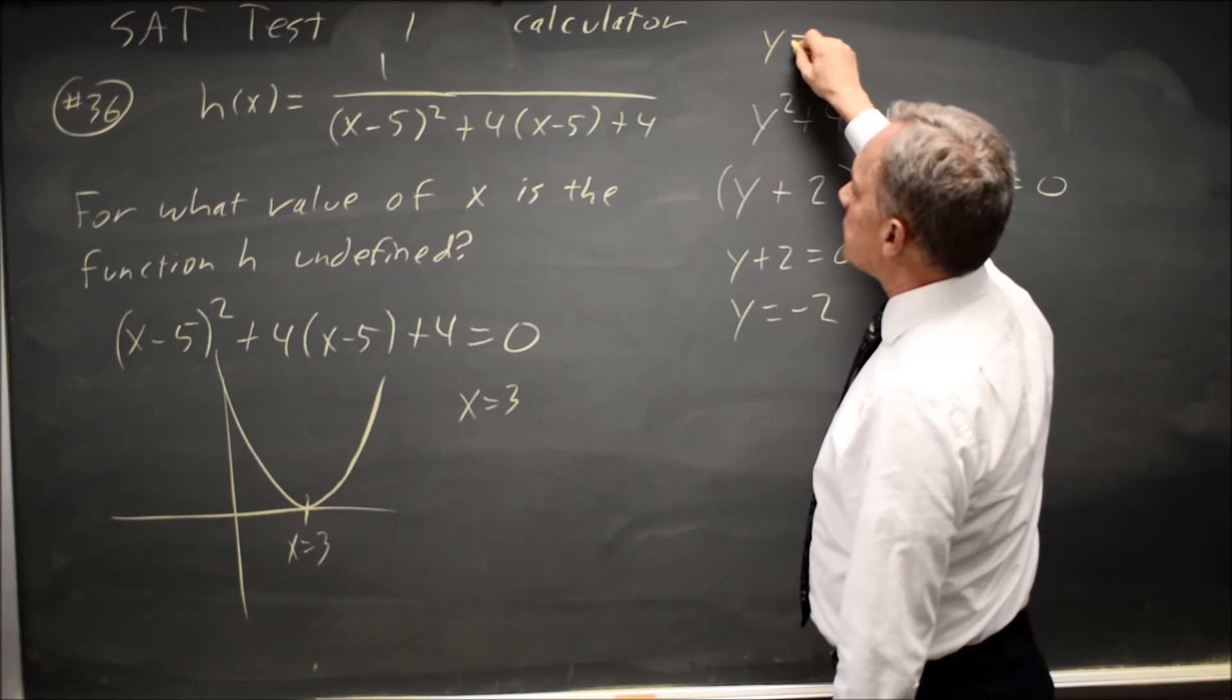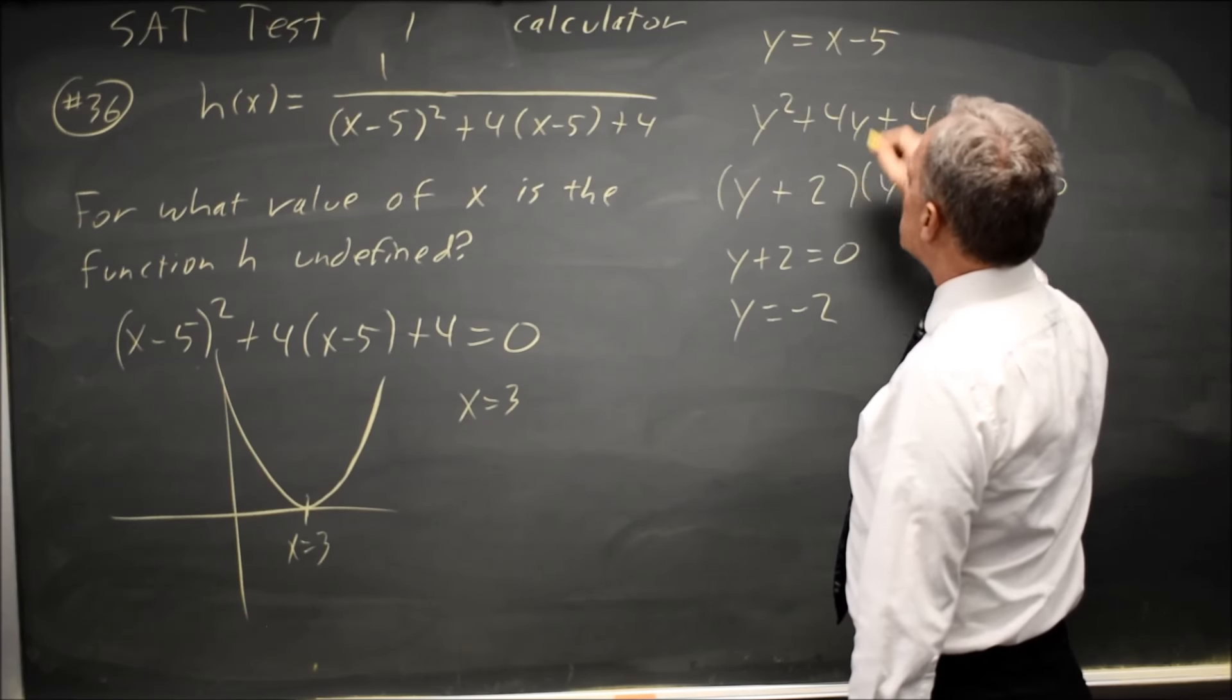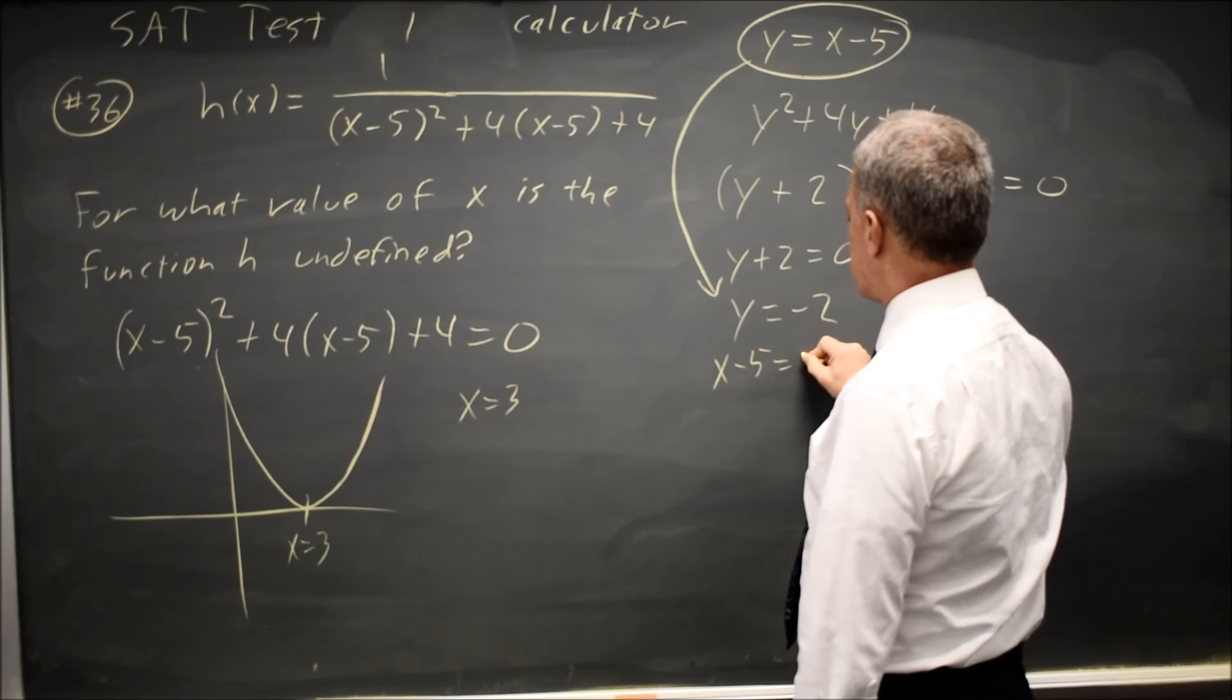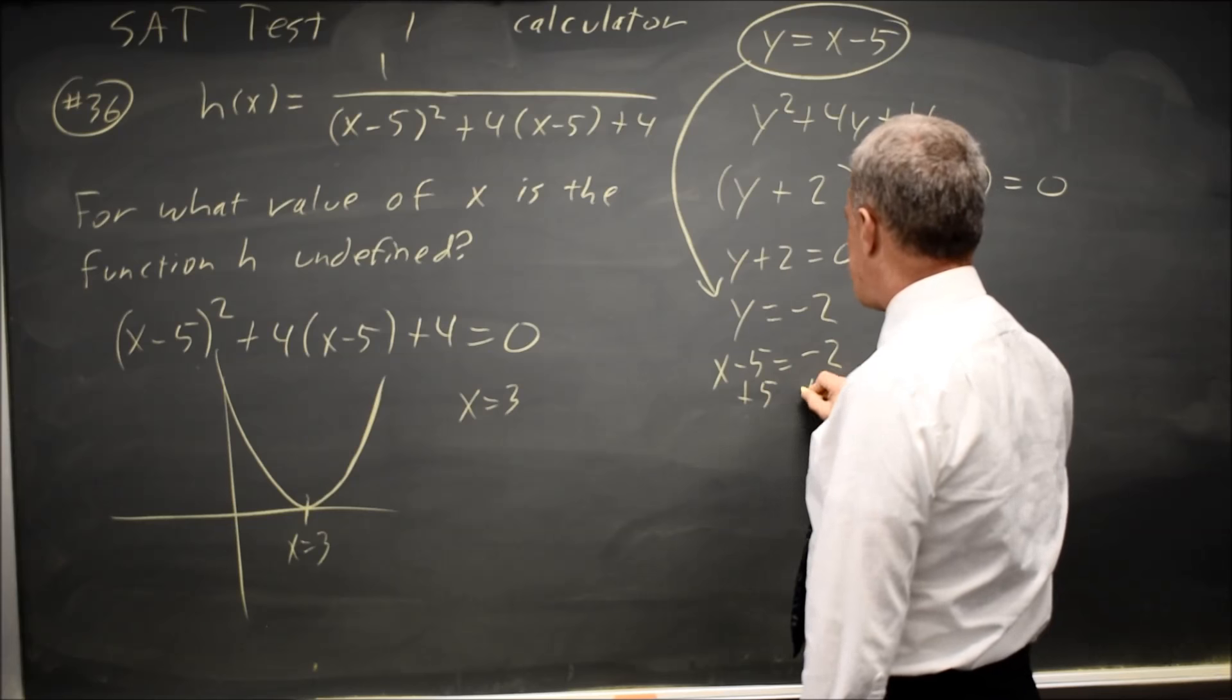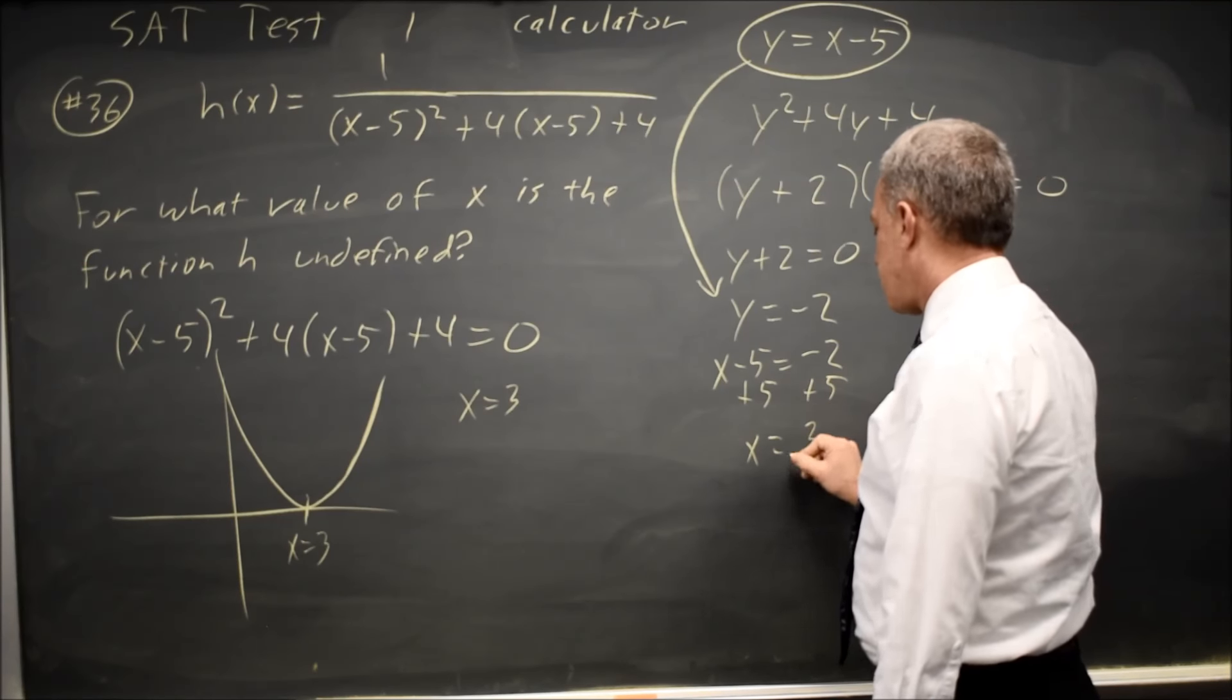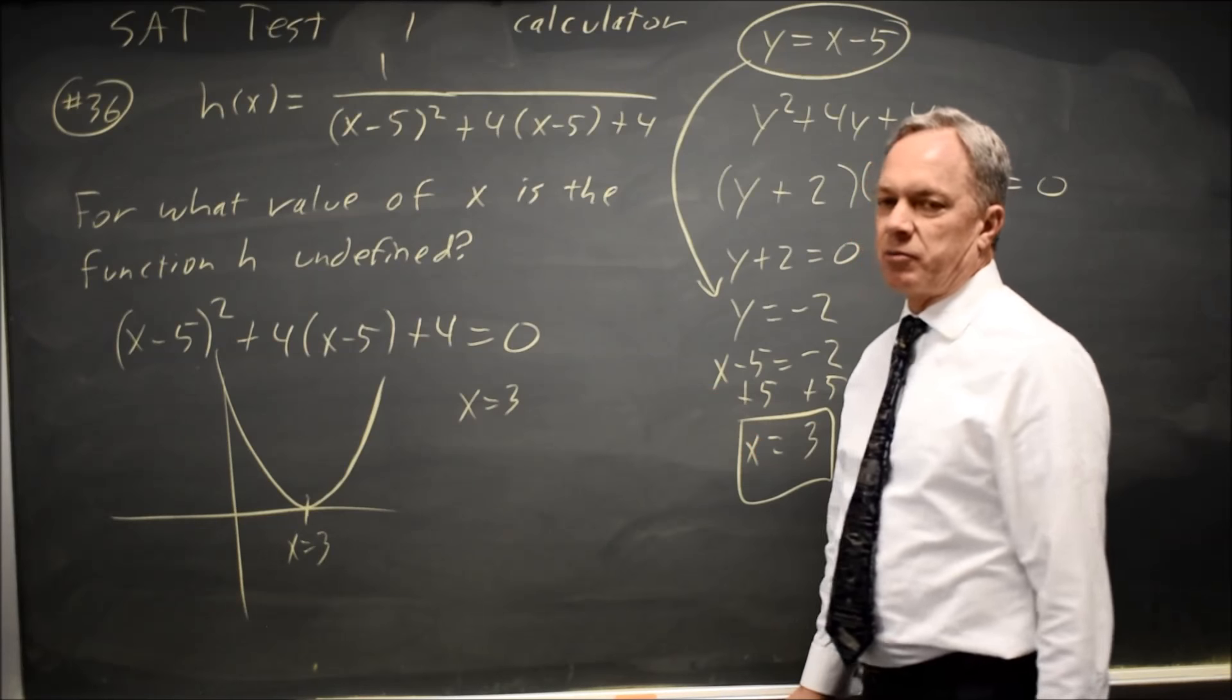And I substitute in y for x - 5. So let's substitute x - 5 back in for y. Add 5 to both sides. x equals -2 + 5 is 3, which is what I found by graphing.